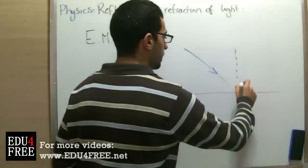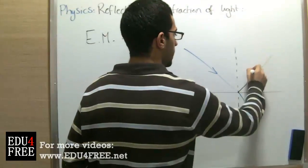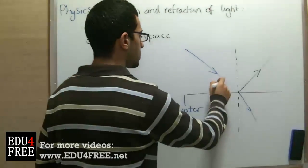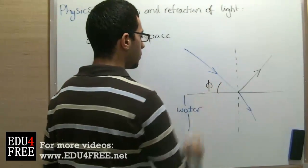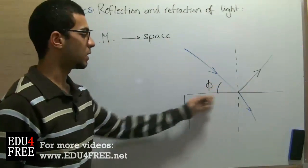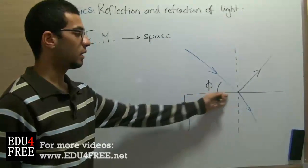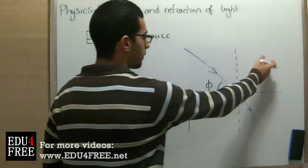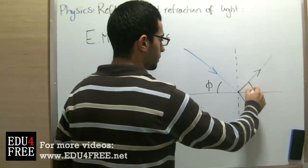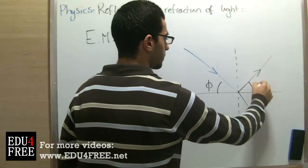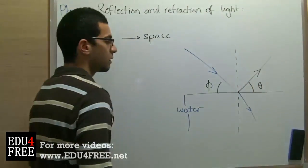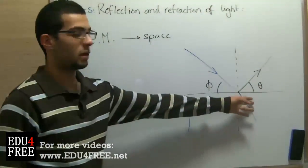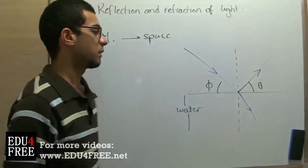Light is reflected such that the angle of incidence — the angle which the light ray makes with the horizontal surface of the medium — equals the angle of reflection, which is the angle the reflected ray makes with the horizontal surface of the medium.